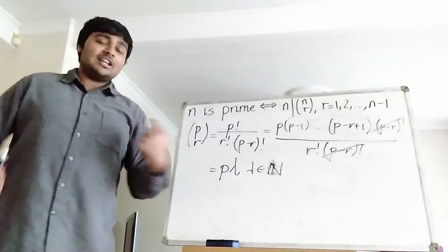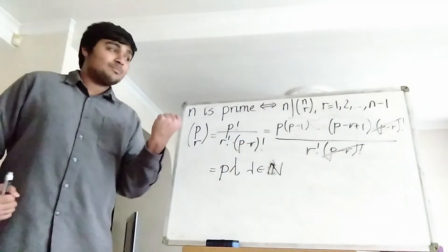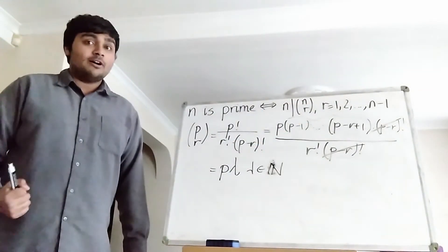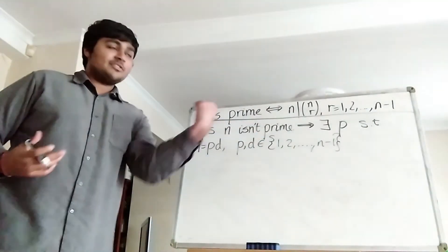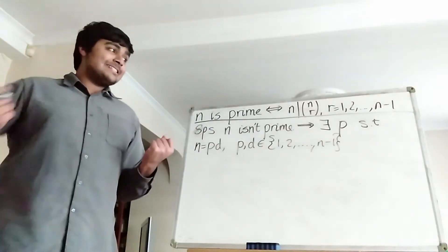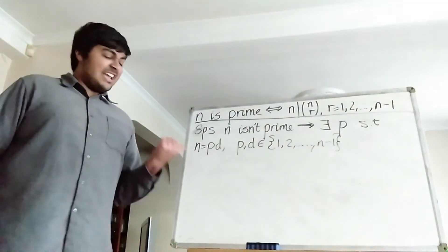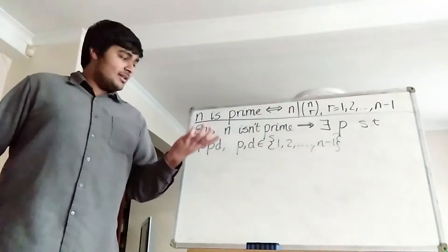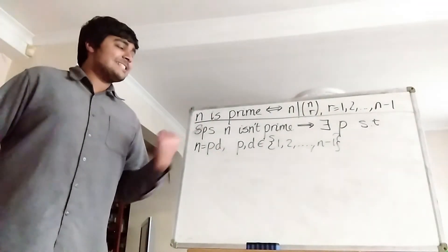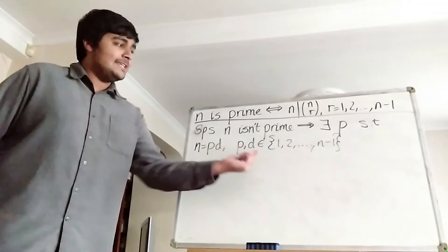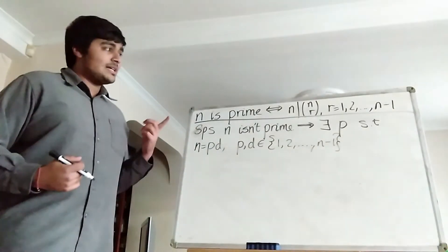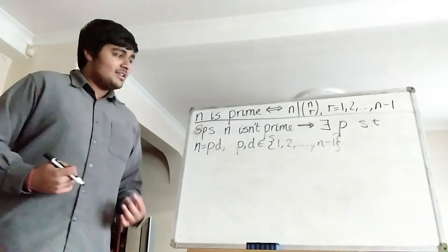Now let's show the other direction by the contrapositive. So if n isn't prime, then we can find some r in this range such that n does not divide n choose r. We assume n is composite, so it has some prime factor p. We can write n equals p times d, and because n isn't prime, both p and d lie strictly between 1 and n. Now I claim that n does not divide n choose p, and that will prove this direction by the contrapositive.